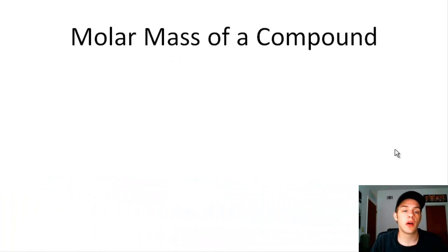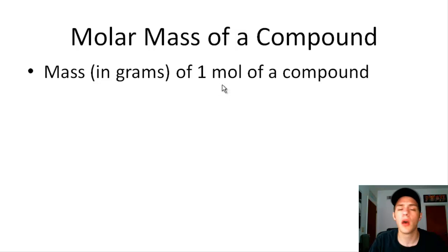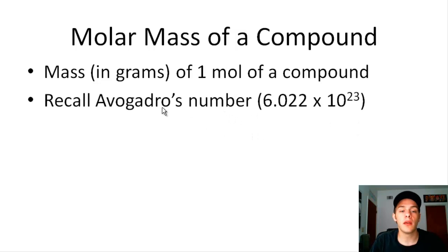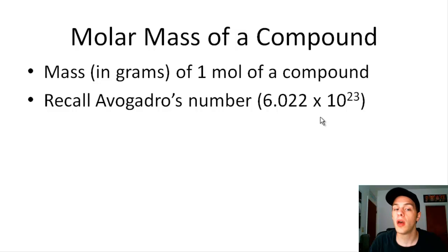The molar mass of a compound is the mass — usually given in grams — of one mole of a compound. If you're unfamiliar with the mole, it might be a good time to brush up on the mole concept. One mole of anything is Avogadro's number of that thing — 6.022 times 10 to the 23rd. So a mole of toothpicks is 6.022 × 10²³ toothpicks, and a mole of anything is always 6.022 × 10²³ of that thing.